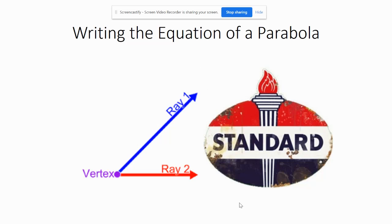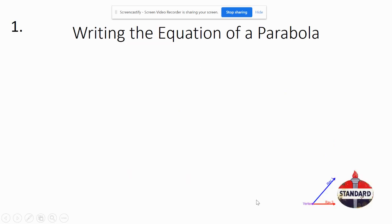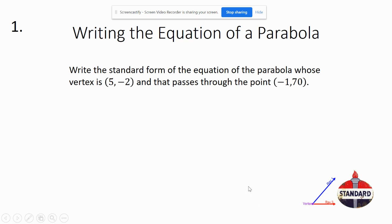Writing the equation of a parabola for our project. First off, our problem is that we have a parabola that goes through the vertex of 5, negative 2, and passes through the point negative 1, 70.